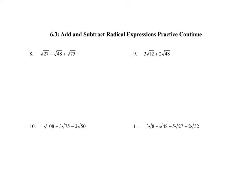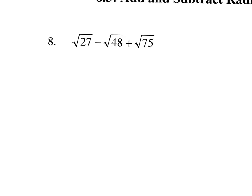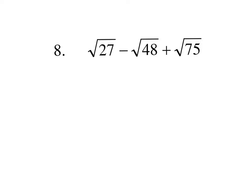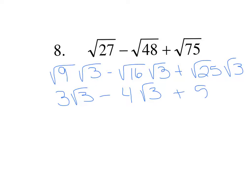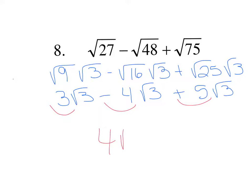On this page we have all kinds of terms, but none can be added until we simplify. Square root of 27: 27 is 9 times 3, giving 3 square root of 3. Square root of 48: 48 is 16 times 3, giving 4 square root of 3. Square root of 75: 75 is 25 times 3, giving 5 square root of 3. All three terms have square root of 3, so we add the coefficients: 3 plus negative 4 plus 5. Positive 3 and positive 5 make 8, and 8 minus 4 is 4, giving 4 square root of 3.